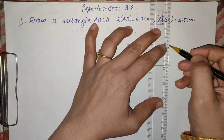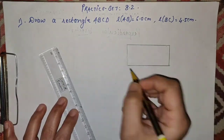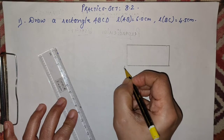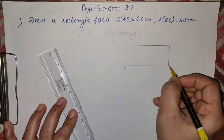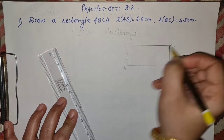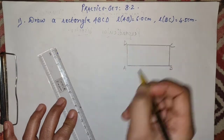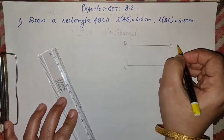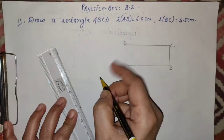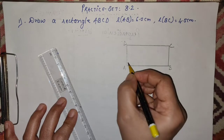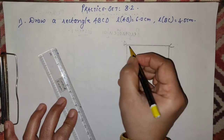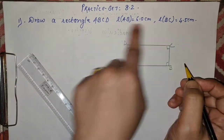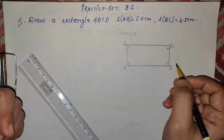First, I always advise you to draw a rough diagram. Rough diagram के बिना कोई construction नहीं होता है। So draw a rectangle ABCD — AB is 6 and BC is 4.5. Rectangle है तो हमको पता है rectangle का figure कैसा होता है। Naming दो, और quadrilateral की naming हमेशा continuous रखोगे — ऐसा A, B, C, D — ऐसा नहीं जो wrong हो।